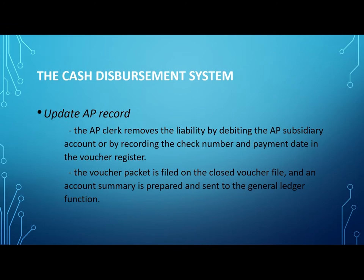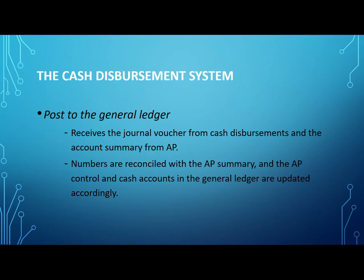Post to the general ledger. The general ledger function receives a journal voucher from cash disbursements and the account summary from AP. The voucher shows the total reductions in the firm's obligations and cash account as a result of payments to suppliers. These numbers are reconciled with the AP summary and the AP control and cash accounts in the general ledger are updated accordingly. The approved journal voucher is then filed. This concludes the cash disbursements procedure.